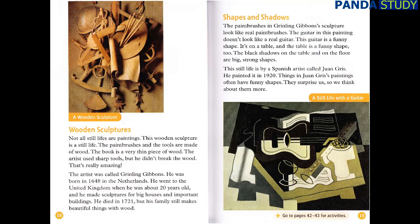Shapes and Shadows. The paintbrushes in Grinling Gibbons' sculpture look like real paintbrushes. The guitar in this painting doesn't look like a real guitar. This guitar is a funny shape. It's on a table, and the table is a funny shape, too. The black shadows on the table and on the floor are big, strong shapes. This still-life is by a Spanish artist called Juan Gris. He painted it in 1920. Things in Juan Gris' paintings often have funny shapes. They surprise us, so we think about them more.